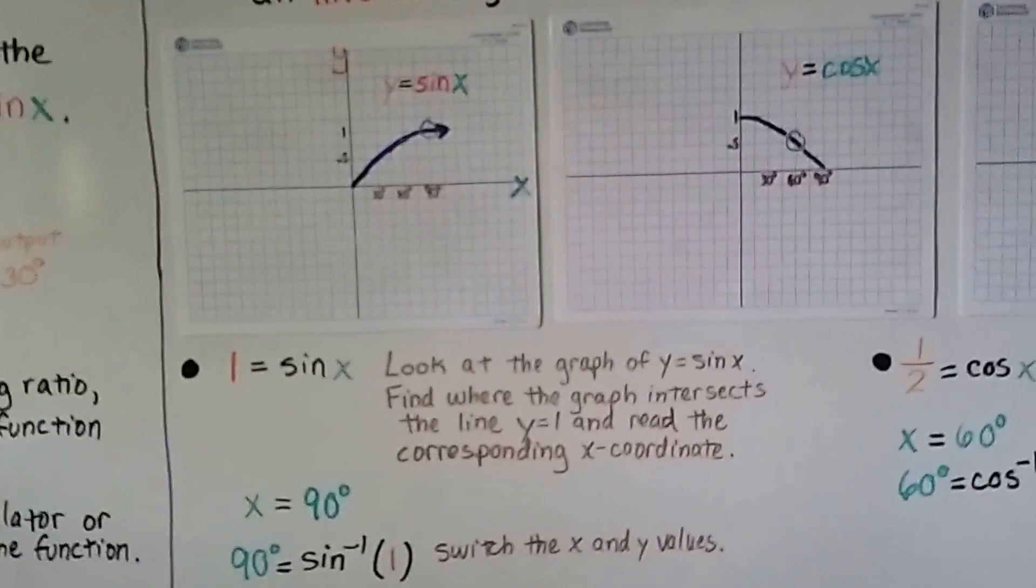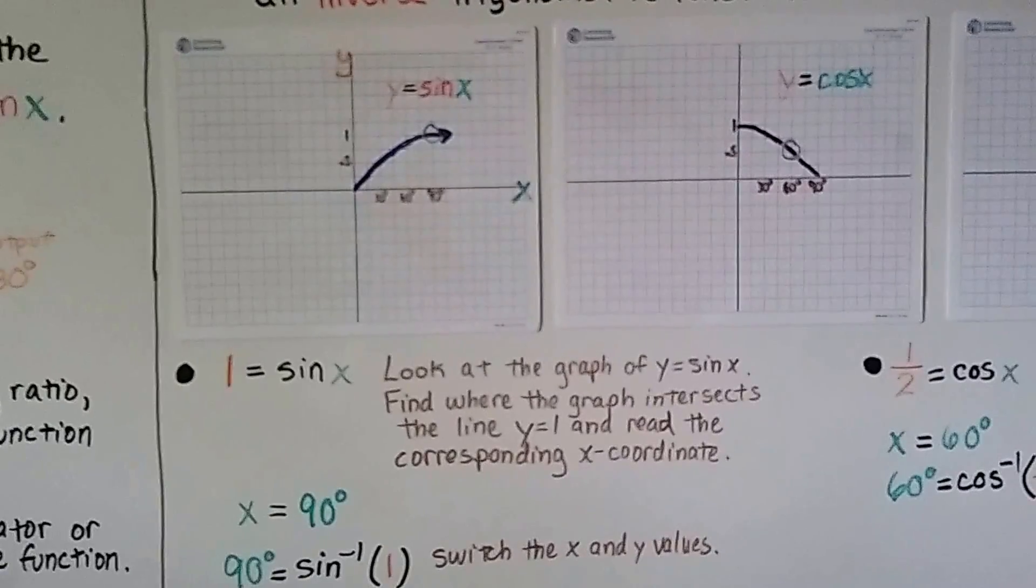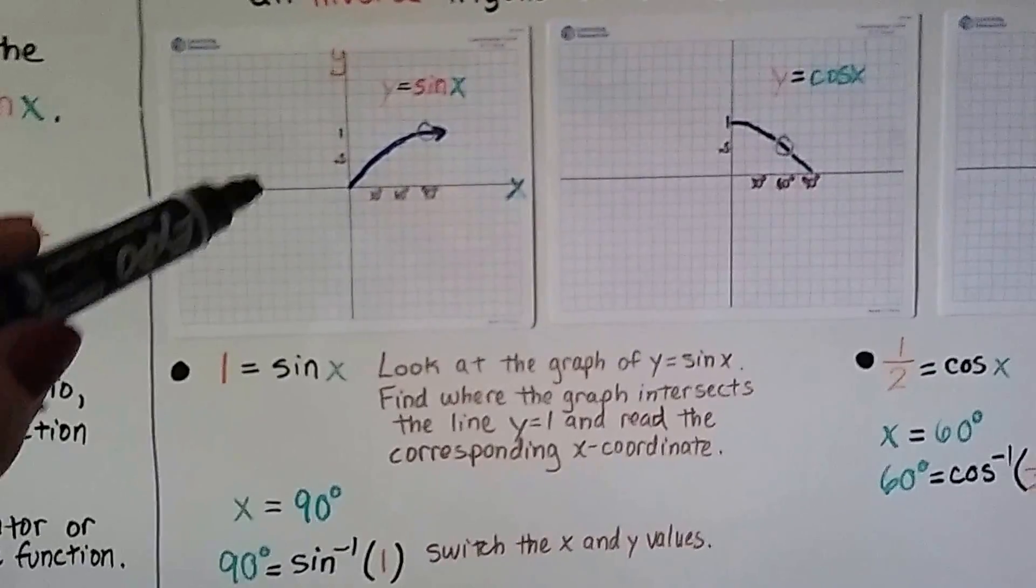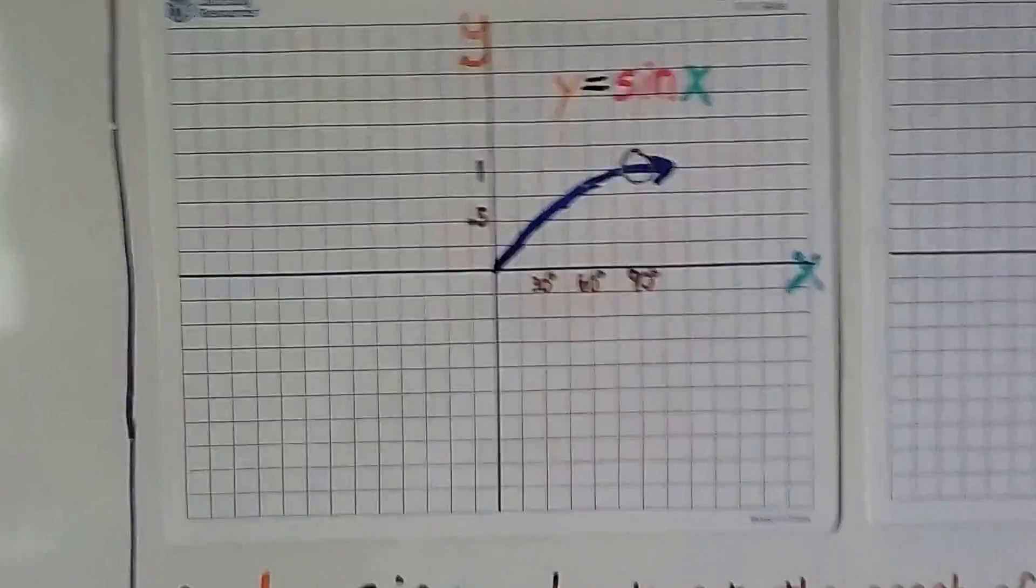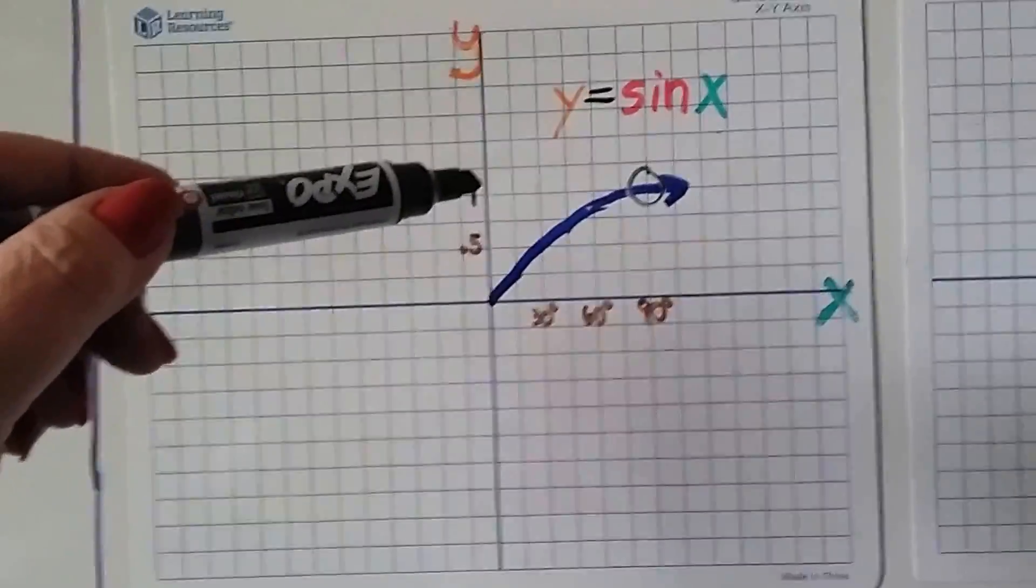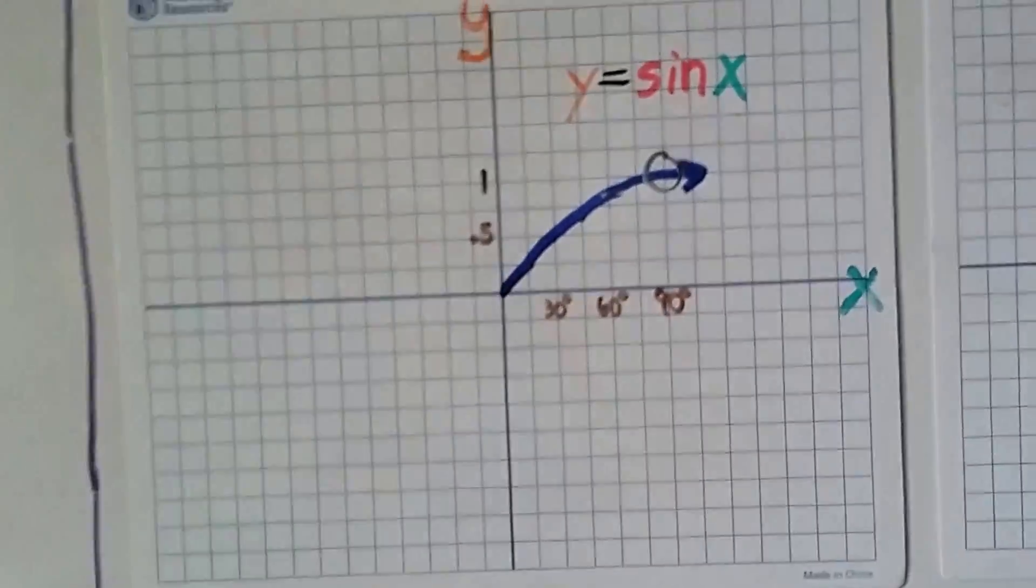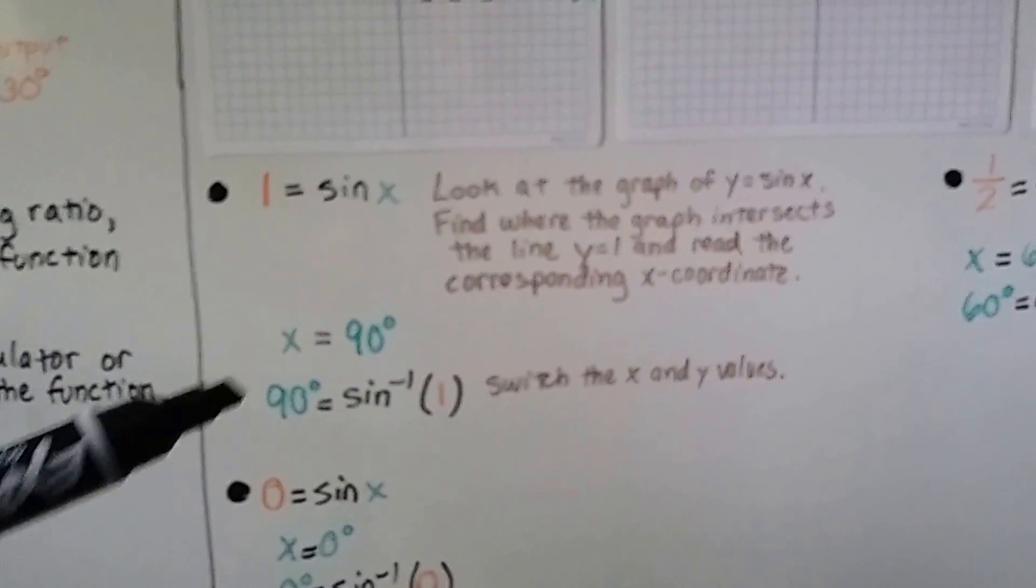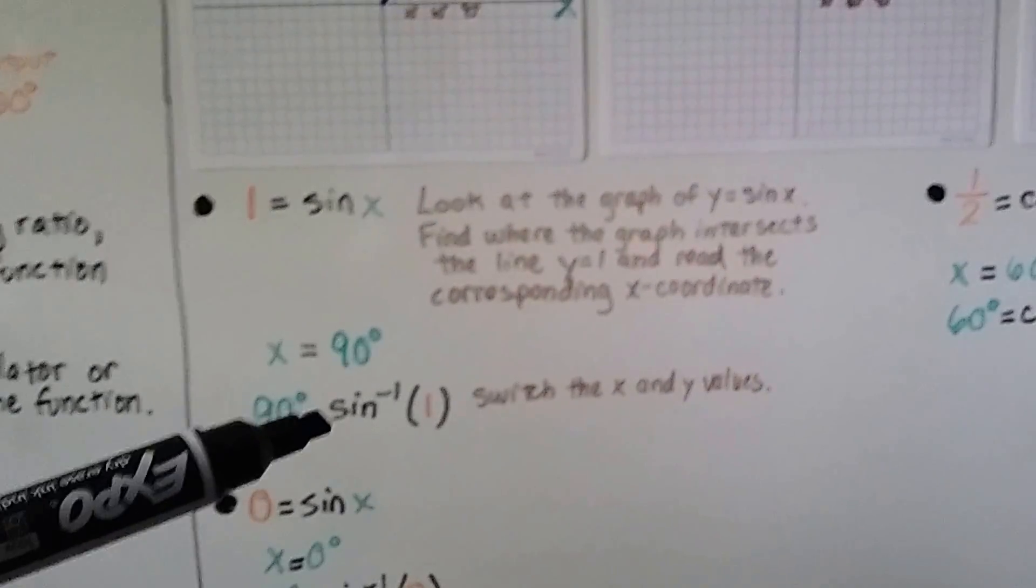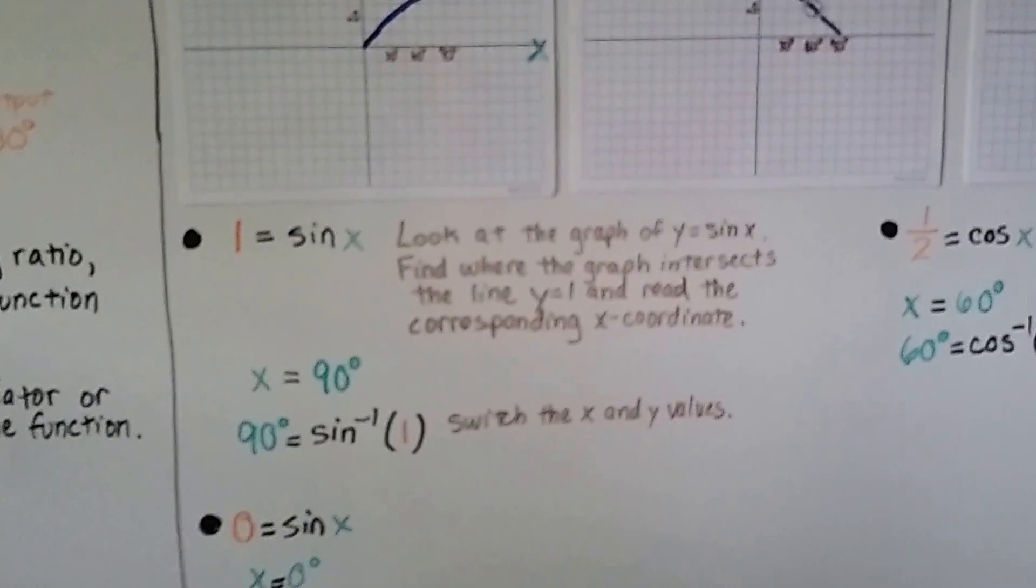For 1 equals the sine of x, we look at the graph of y equals sine of x and find where the graph intersects the line y equals 1 and read the corresponding x-coordinate. Where y equals 1 is right here and the corresponding x-coordinate is 90 degrees. So, x equals 90 degrees. We can write 90 degrees equals the inverse sine of 1 and switch the x and y values.